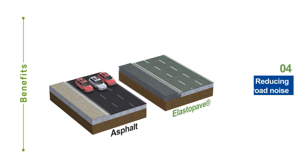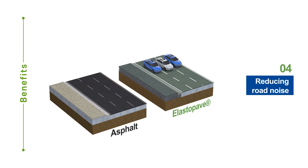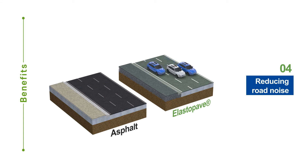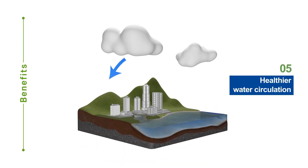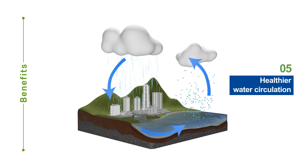Moreover, ElastoPave contributes to making roads quieter by absorbing traffic noises from tire friction and car engines due to its irregular openings. ElastoPave also contributes to a cleaner atmosphere and restores circulation through groundwater penetration.